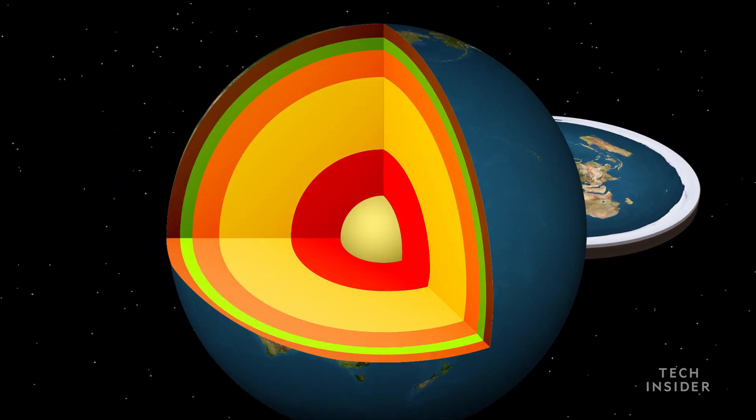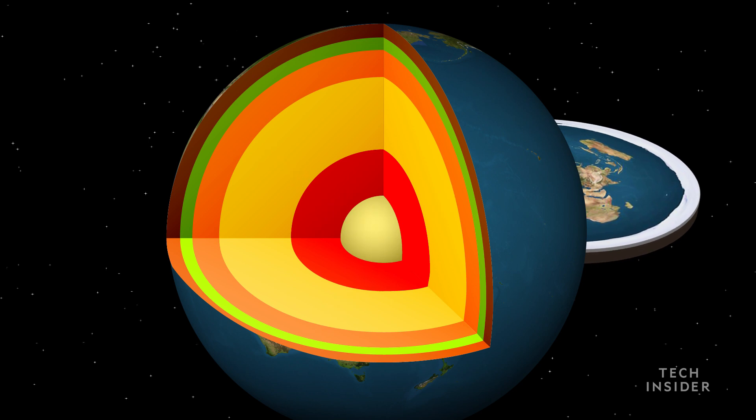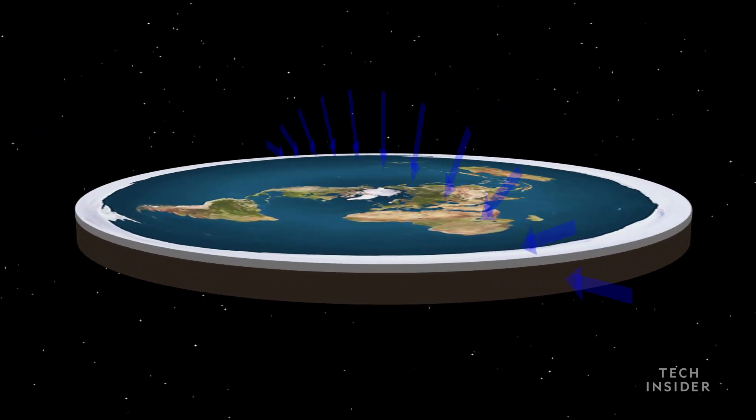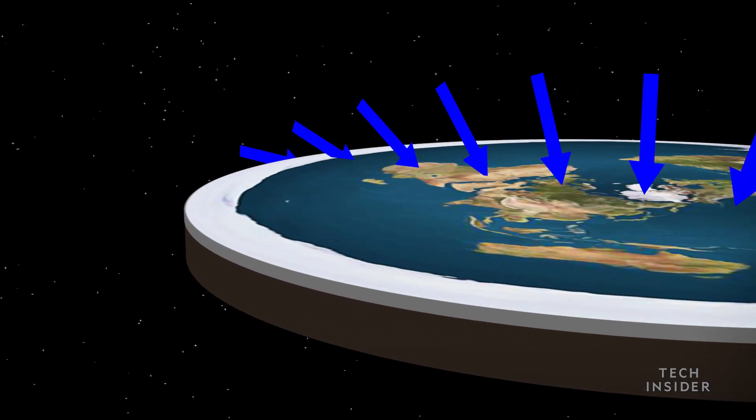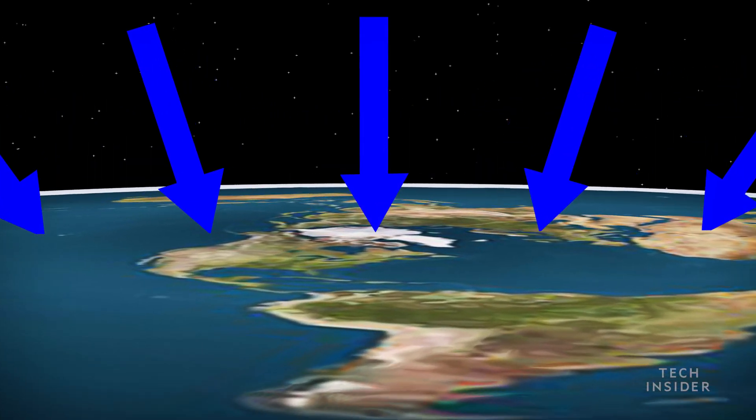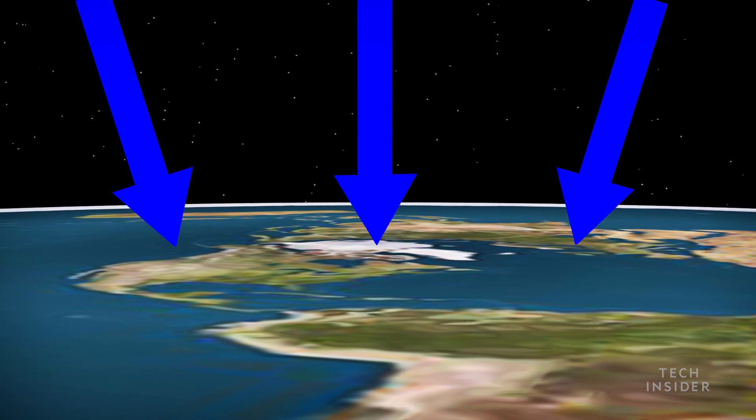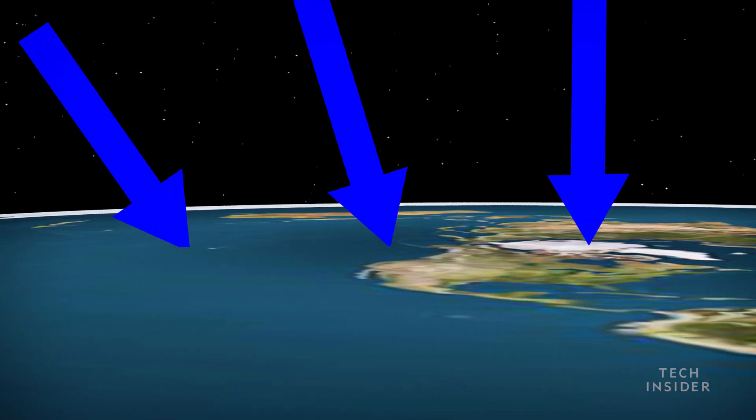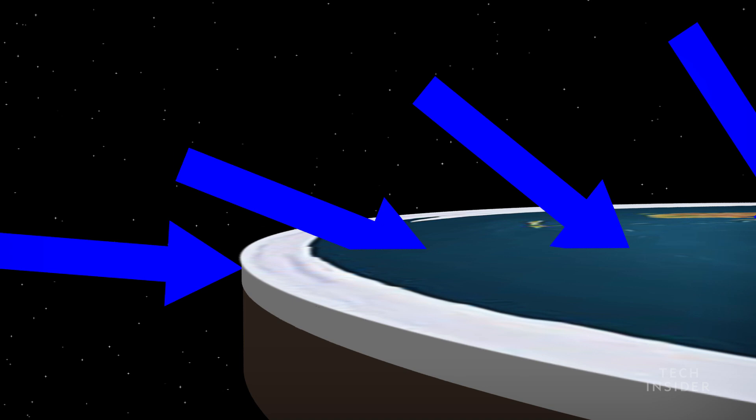On a sphere, gravity pulls in the same direction everywhere on the surface, but on a disk gravity changes direction as you move toward the edge. At the center you feel a downward pull just like on spherical Earth, but as you move out gravity starts pulling sideways as well as downwards.